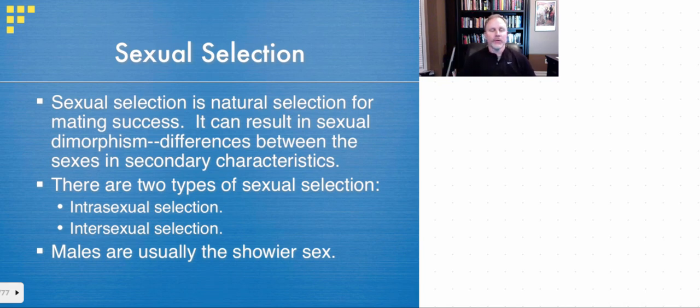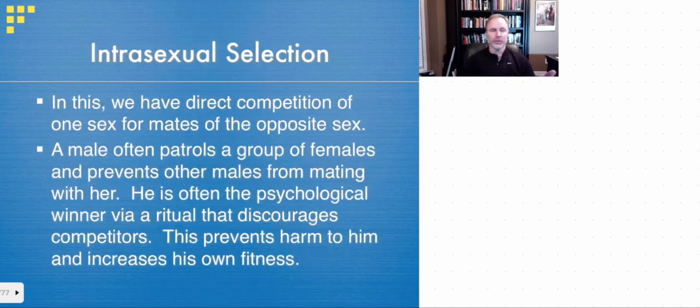And in class a little bit, we've talked about sexual selection. And what this basically is, is where one of the sexes is kind of choosing the other. One of the sexes has differences that the other one finds attractive and so forth. And these are due to those secondary sexual characteristics. So there's two main types of sexual selection. You have intra-sexual selection and inter-sexual selection. And generally speaking, the males are the showier of the sex.